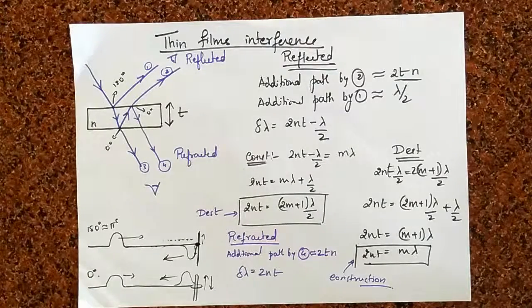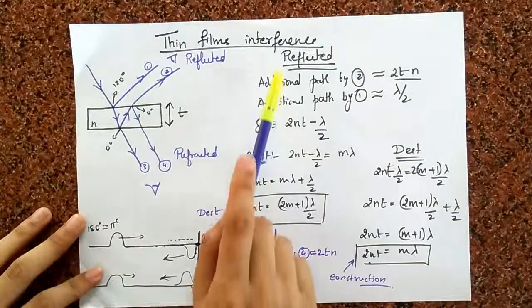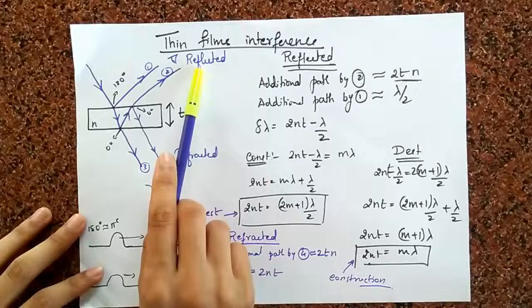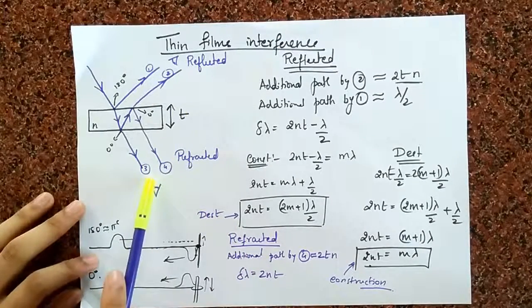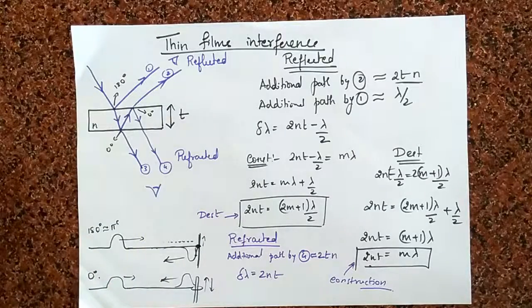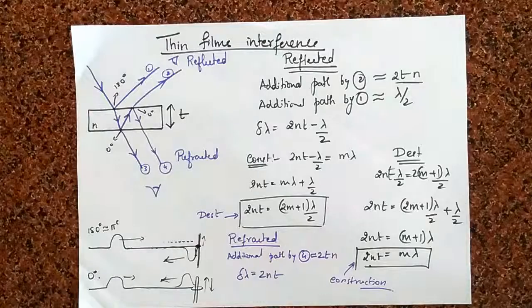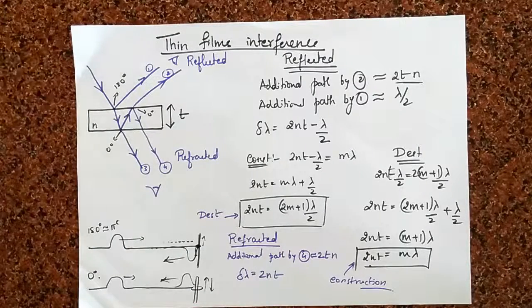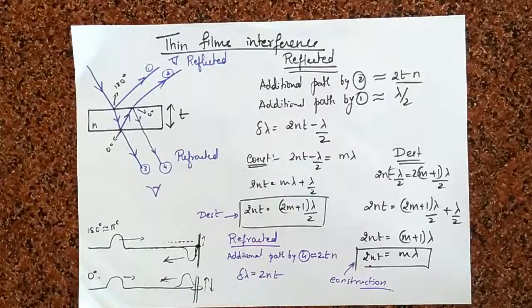What this also means is that whatever colors you're going to see in the reflected case, that is a construction, it's not going to come in the refracted case because it's a destruction. What this means is that whatever you see in the reflected case, all the colors that you can see in the reflected case will be missing in the refracted case. And of course, vice versa.